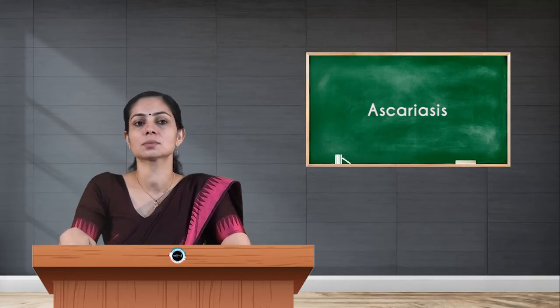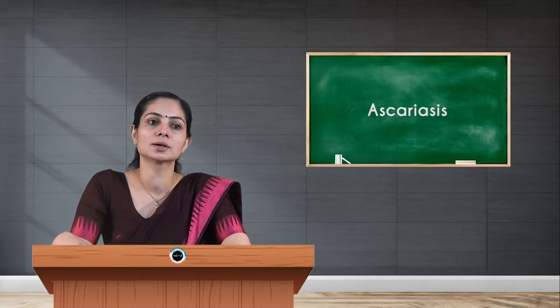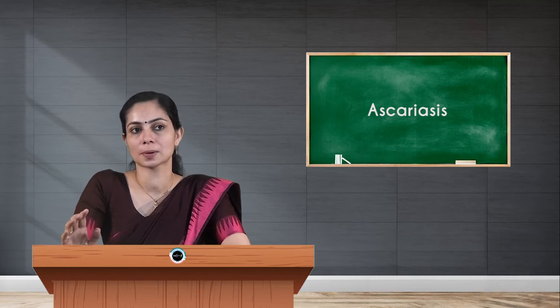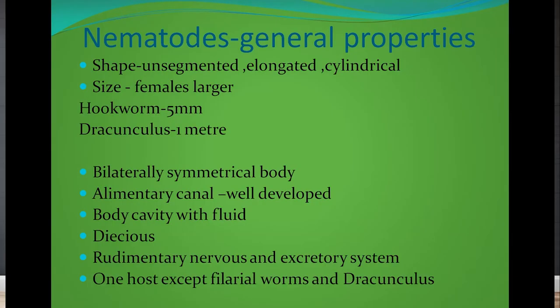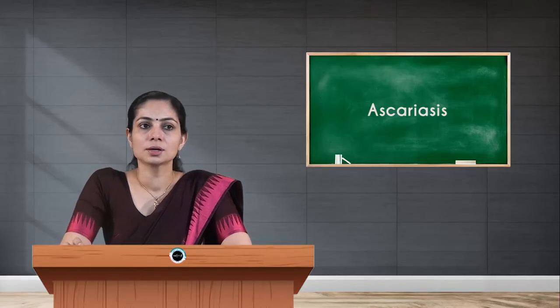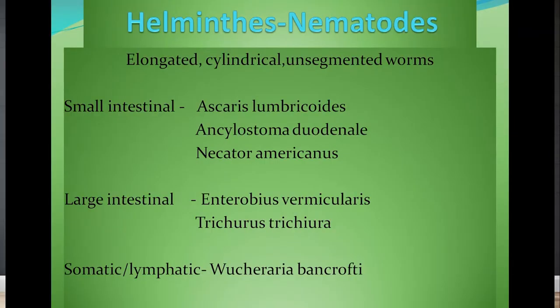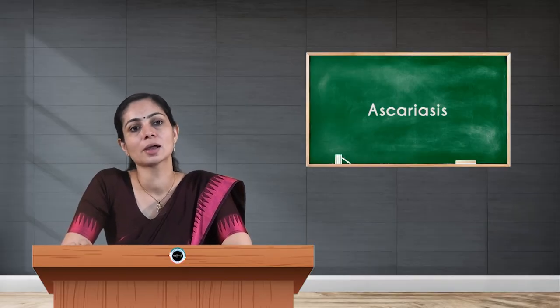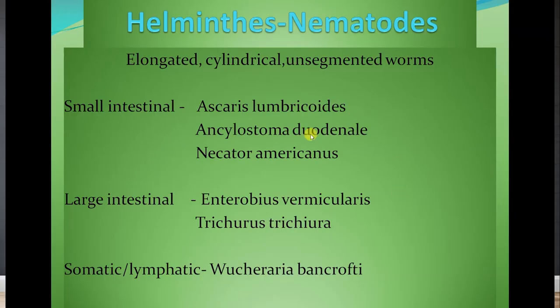Nematodes have a rudimentary nervous system and excretory system. Most nematodes complete their life cycle in only one host, with exceptions being filarial worms and Dracunculus. Based on their habitat in the human body, nematodes are classified into small intestinal nematodes, large intestinal nematodes, or somatic/lymphatic parasites. Under small intestinal nematodes, we have Ascaris lumbricoides, which we will discuss in detail today.